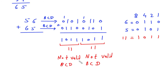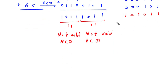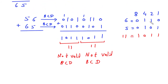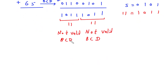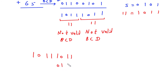To make them valid, we add 6 to each invalid group. 6 in BCD is written as 0110. Since both groups are invalid, we add 0110 to each of them.